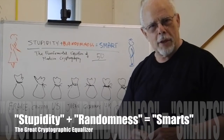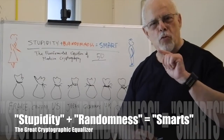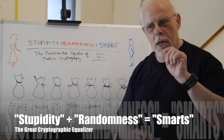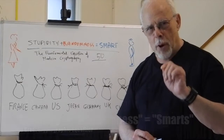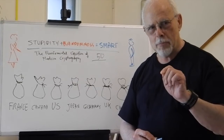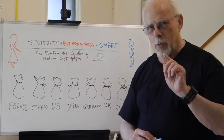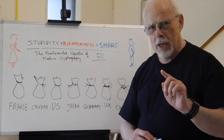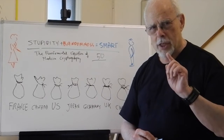Stupidity plus randomness equals smarts. This is a critical equation for modern cryptography and cybersecurity.